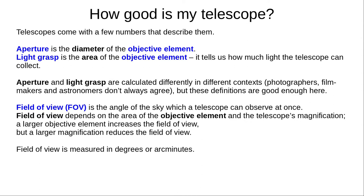Now we'll consider some of the numbers used to describe the quality and structure of telescopes. Understanding these numbers is very important if you're considering buying a telescope, though I also recommend reading the latest issue of a quality astronomy magazine for telescope reviews. We've already discussed the diameter of the objective element — this is called its aperture. Light grasp, which tells us how much light the telescope can collect, is the area of the objective element. Field of view, or FOV, is the angle of the sky the telescope can observe at once, measured in degrees or arc minutes. A larger objective element increases the field of view, but a larger magnification reduces it.